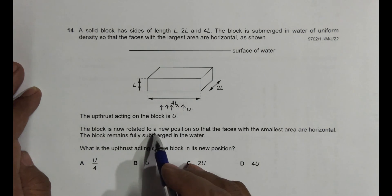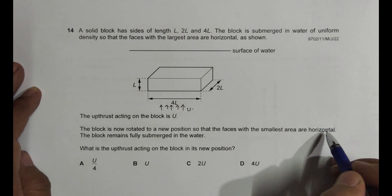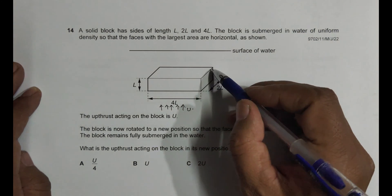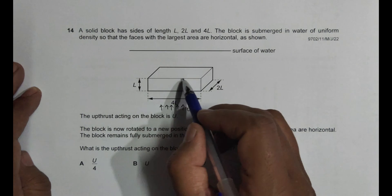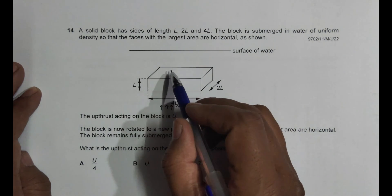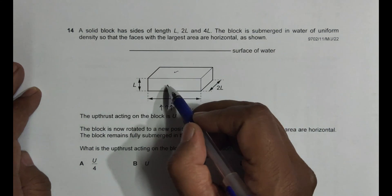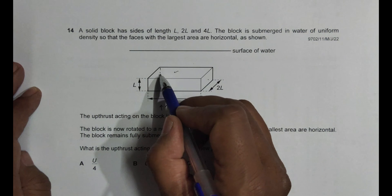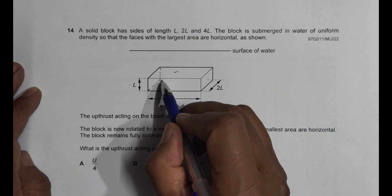The block is now rotated to a new position so that the faces with the smallest area are horizontal. As I go through this, the face with the smallest area is this side here. This surface has the highest area, same as the one below. These sides have medium area, and these have the smallest area.